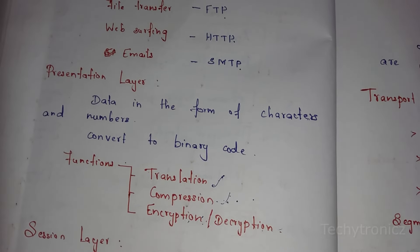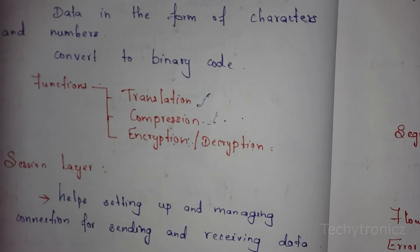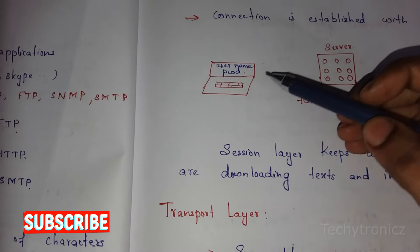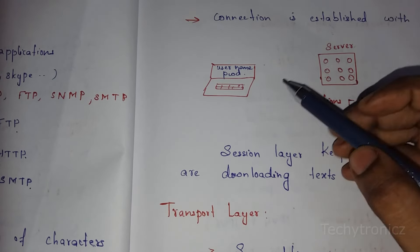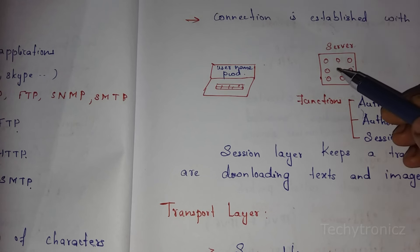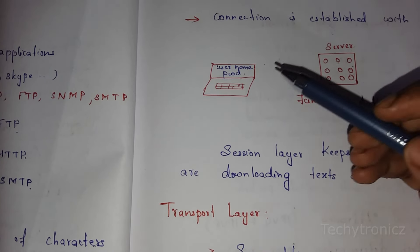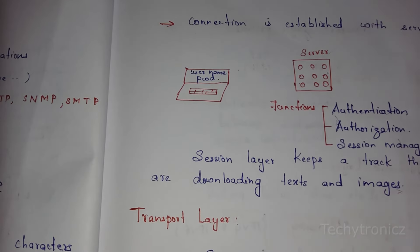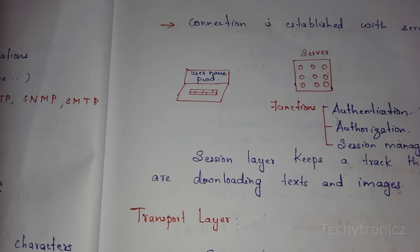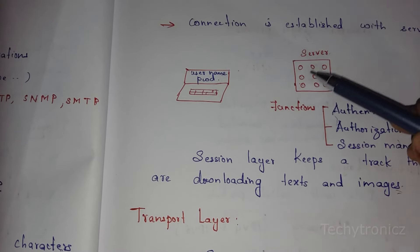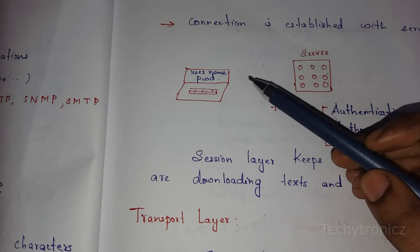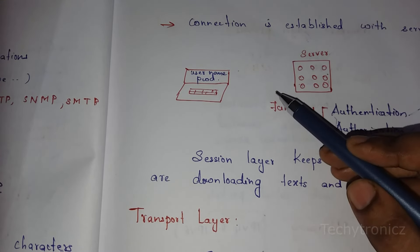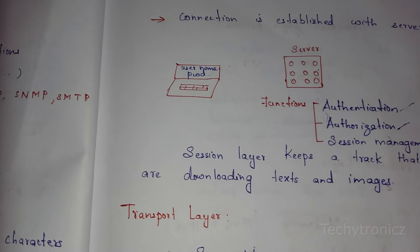The next one is the session layer. The session layer helps in setting up and managing connections for sending and receiving data. When we transmit data, a connection is established — for example, in a lab, the server is connected to each other. The connection is established using a username and password. First we authenticate with username and password, then authorization checks whether the actual person is allowed to access. If incorrect, it is locked.